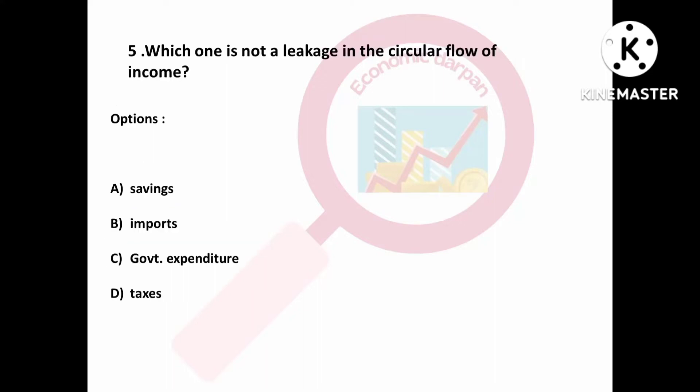Question number five is: which one is not a leakage in the circular flow of income — Option A: savings; Option B: imports; Option C: government expenditures; Option D: taxes. Option C is right. Government expenditure is not a leakage in the circular flow of income.